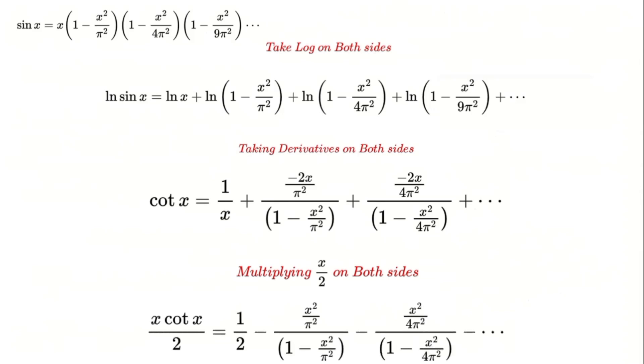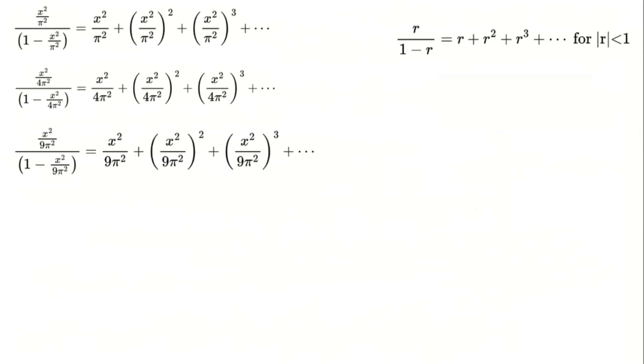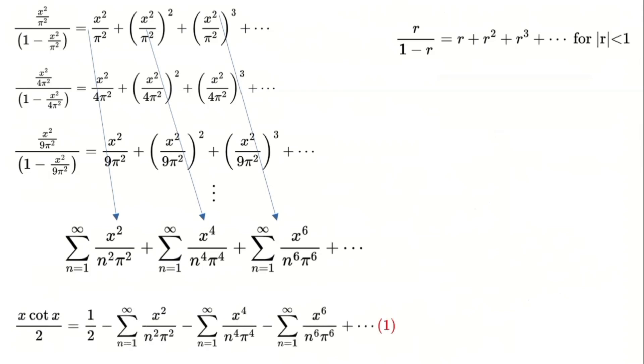Remember the formula for the sum of an infinite geometric series? It's the ratio divided by 1 minus the ratio, provided the common ratio is less than 1 in absolute value. Using this formula, we calculate the sum, leading to a simplified equation, which we'll call equation 1.